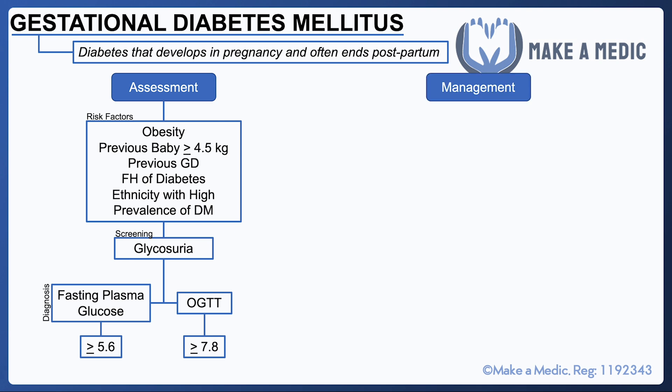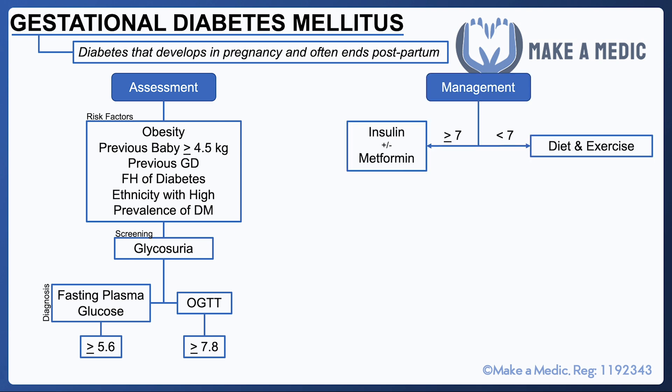The way that GDM is managed depends largely on the fasting plasma glucose at the time of diagnosis. If it is greater than or equal to 7, then insulin is started straight away and this may be combined with metformin. If it is less than 7 — so between 5.6 and 7 — diet and exercise may be trialled for a couple of weeks to see whether it will bring about a satisfactory improvement in the fasting plasma glucose.